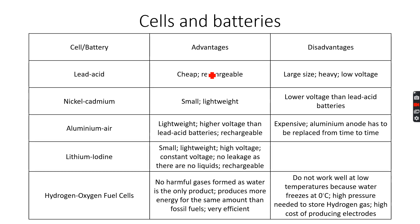There are several different types of cells and batteries, as you can see here, and all of them have their own advantages and disadvantages. Go through these and learn one or two of each. You only need to learn the advantages and disadvantages, so you can pause the video and note all of this down.